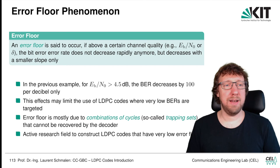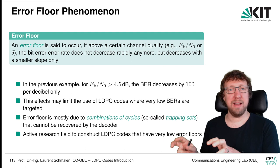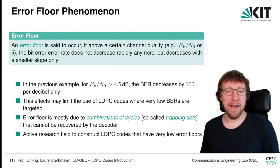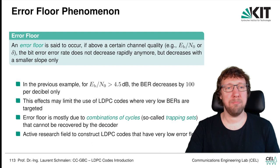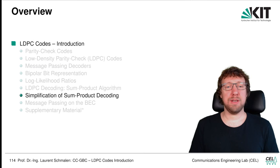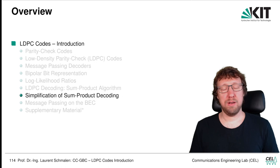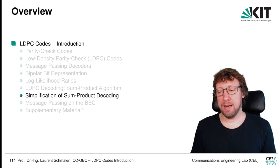The error floor occurs above a certain E_b/N_0 where the BER no longer decreases rapidly but only with a small slope — for example, decreasing by a factor of 100 per decibel rather than per 0.1 dB. This limits LDPC codes to applications that can tolerate such a floor. The error floor is caused by cycles and error patterns that trap the decoder, and remains an active research topic. Finally, the sum-product decoder uses hyperbolic tangent operations that are difficult to implement efficiently — simplifications will be covered in the next video.